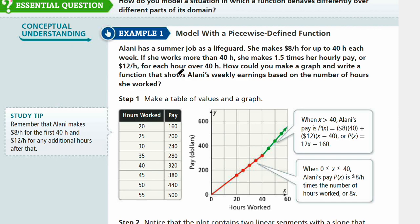But if she works more than 40 hours, she makes 1.5 times her hourly pay. So when x is greater than 40, at exactly 40 hours it's still going to be 40 times 8, which is $320. And then after that, 41 hours, 45 hours, it's going to be 1.5 times her hourly pay, or $12 per hour.